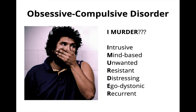Our next disorder, obsessive compulsive disorder or OCD, is characterized by the presence of obsessive thoughts as well as the compulsive behaviors that result from them. Obsessions can take various forms, from repeatedly worrying that you forgot to lock the door, to being haunted by recurrent thoughts of murdering others and other violent imagery. Use this latter image to think of a person who has started to have obsessive thoughts of murdering others. Horrified, he thinks to himself, 'I murder?' with shock and bewilderment. This will remind you that obsessive thoughts are specifically intrusive, meaning they appear suddenly and without warning; mind-based, in that the patient recognizes they're coming from their own mind; unwanted; resistant to attempts to make them go away; distressing; ego-dystonic, meaning the patient recognizes these thoughts don't reflect their genuine desires; and finally, recurrent.